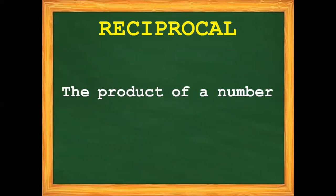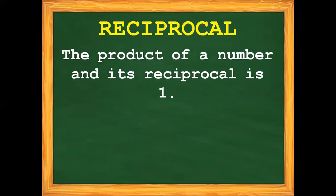The product of a number or a fraction and its reciprocal is always 1. For example, if we multiply 2 times its reciprocal, which is 1 half, the product is always 1. If we multiply 3 fourths times 4 thirds — which is the reciprocal of 3 fourths — the product is always 1. Always remember that the product of a number or a fraction and its reciprocal is always 1.